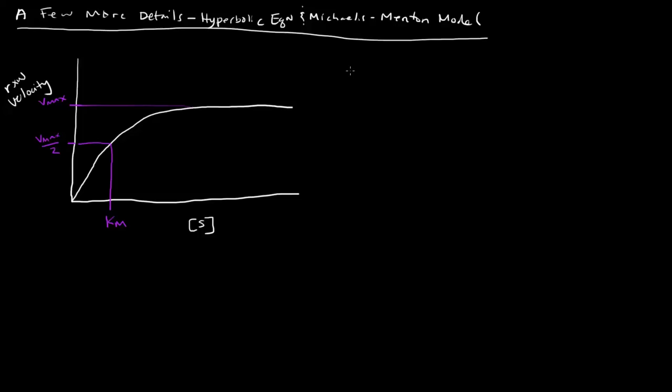We mentioned the hyperbolic equation. If you wanted to find the velocity of an enzymatic catalyzed reaction, you would use this equation. With this hyperbolic equation, if you knew the Vmax and the Km, all you had to do is plug in the substrate concentration and you'd find the velocity at that particular substrate concentration. Now I want to go into a few more details about what you should expect mathematically at these different substrate concentrations.